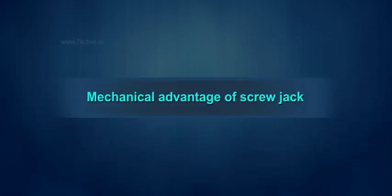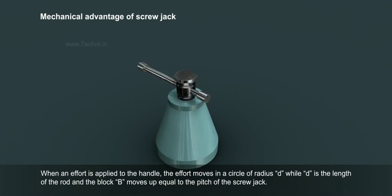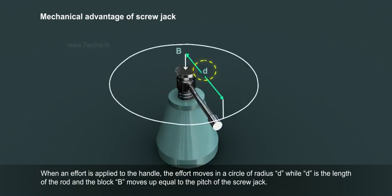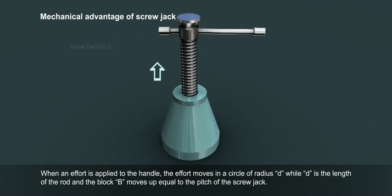Mechanical Advantage of Screw Jack: When an effort is applied to the handle, the effort moves in a circle of radius D, while D is the length of the rod, and the block B moves up equal to the pitch of the screw jack.